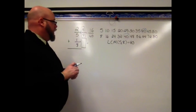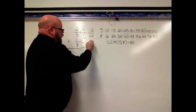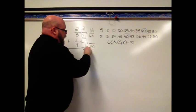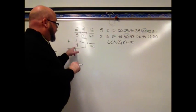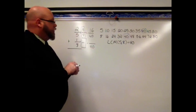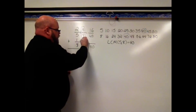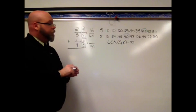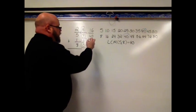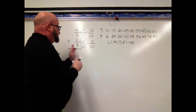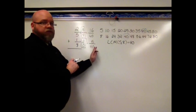I need the same denominator, denominator 40, to change the name of 1 eighth. 8 times what gives me 40? That's 5. So my fraction equal to 1 is 5 fifths. 1 times 5 is 5. So 1 eighth gets renamed 5 fortieths.